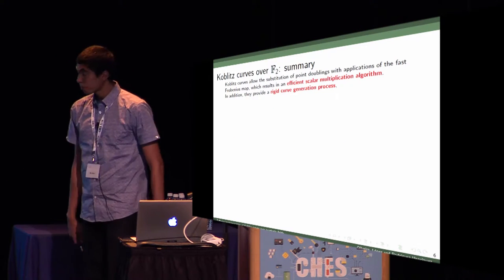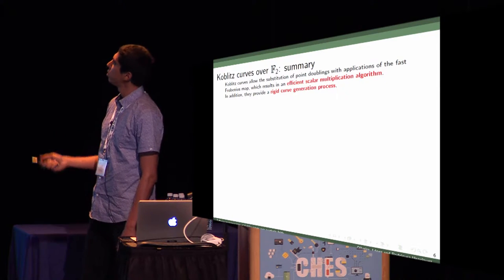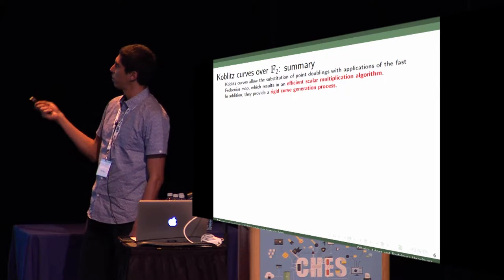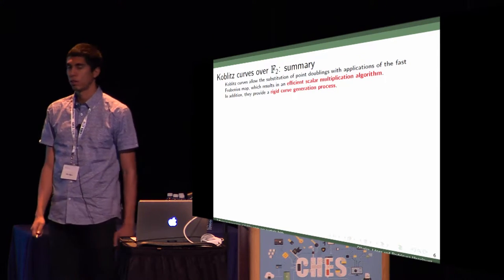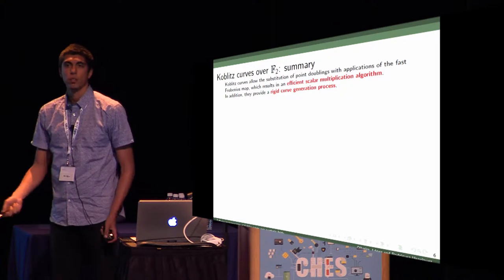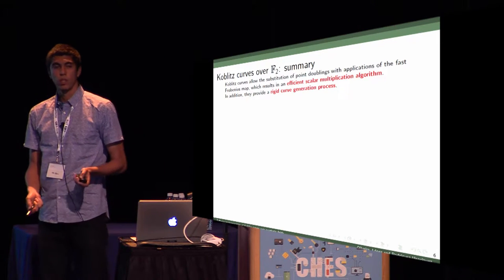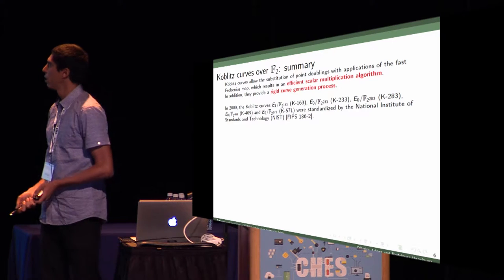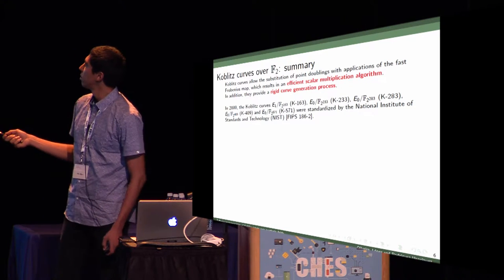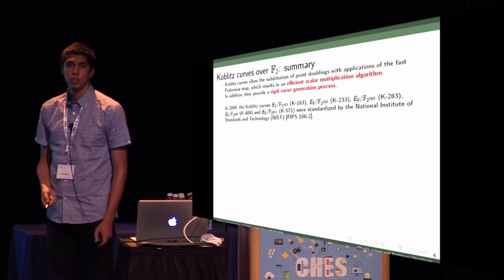As a summary, the Koblitz curves allow substitution of point doublings by Frobenius map, which results in efficient scalar multiplication algorithms and provides rigid curve generation processes. You have to choose between A equals 0 or 1. That's the only option for parameters. In 2000, many curves were standardized by NIST, which provides different security levels.